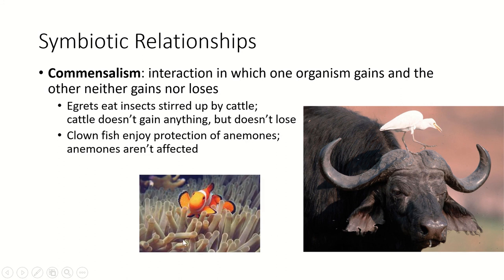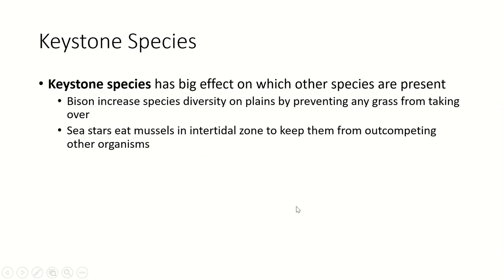Another example of commensalism is clownfish that live among the tentacles of anemones. The anemone doesn't care whether the clownfish is there — it doesn't benefit the anemone but also doesn't harm it. The clownfish is protected by the anemone, and the anemone is unaffected — it can still eat other prey that comes along. If the clownfish wants to hang out there, that's fine by the anemone.